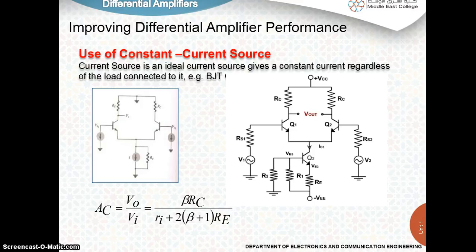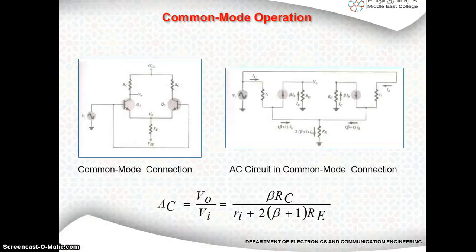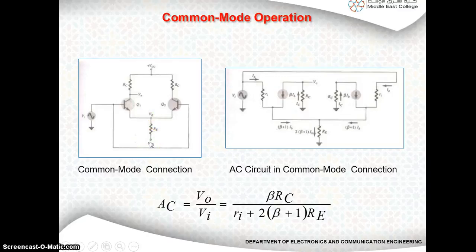So far in the differential amplifier discussed, we use the combination of resistance Re and minus Vee to produce the emitter DC bias current. In our earlier discussion, we had Re and minus Vee to produce the emitter base current.